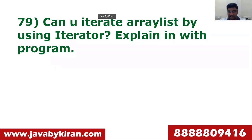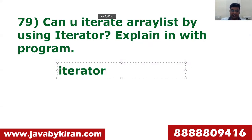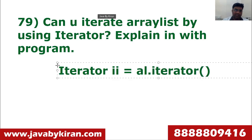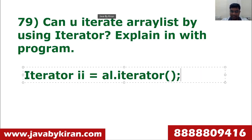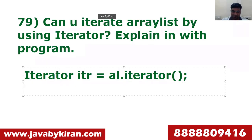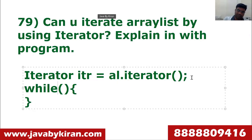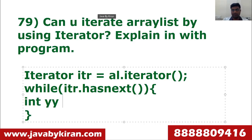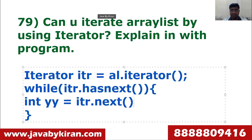How do you iterate a list using an Iterator? You create an Iterator object — for example, Iterator itr = list.iterator() — then use a while loop with itr.hasNext() and itr.next() to access elements. If you can write this smoothly, it shows the interviewer that you are a sincere person who has studied well.